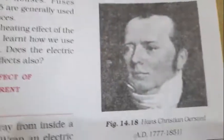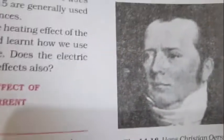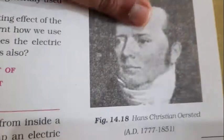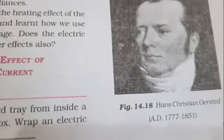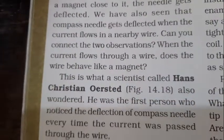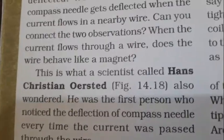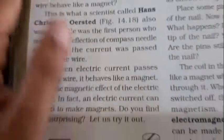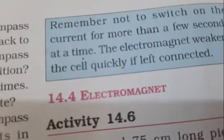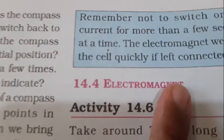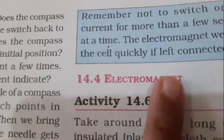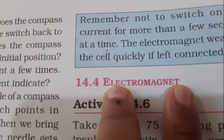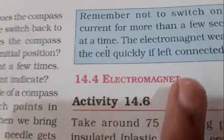Mostly the question asked is: who was the first person to see the deflection in the compass? That is Hans Christian Oersted. He was the first person to observe and notice the deflection of the compass needle. Related to this magnetic effect of electric current, there are different applications we can use — the first is the electromagnet.